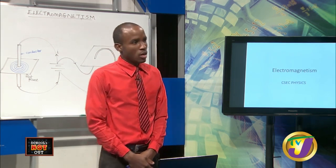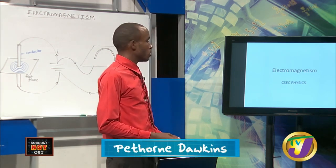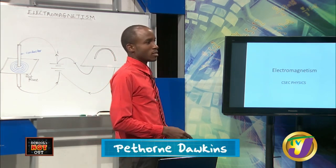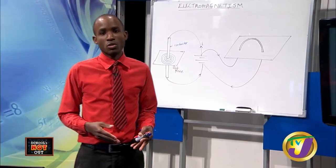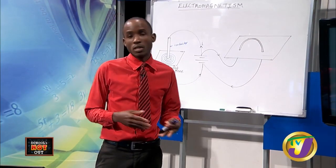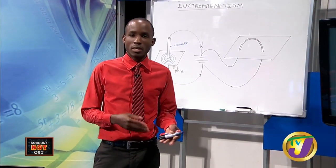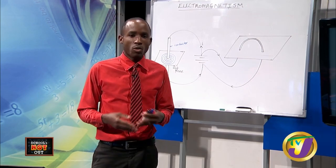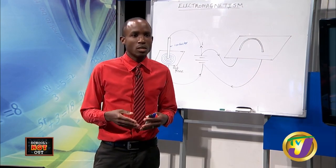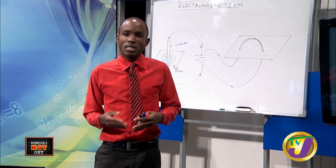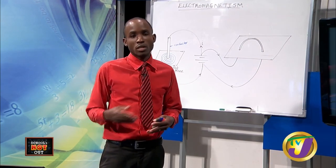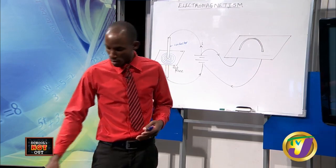Today's lesson is on CSEC Physics. I am Perthoran Dawkins. We're going to look at electromagnetism — a combination of two words: electricity and magnetism. We're going to look at the close relationship that exists between electricity and magnetism.